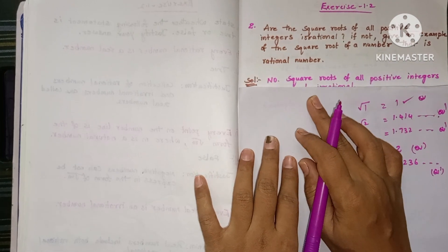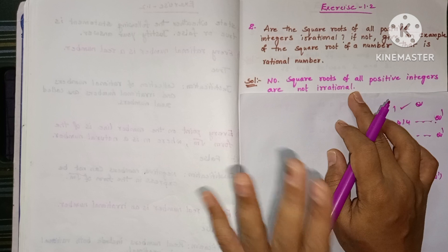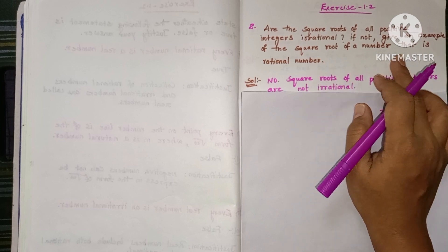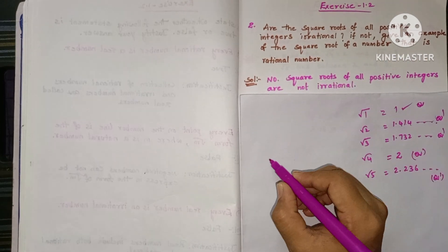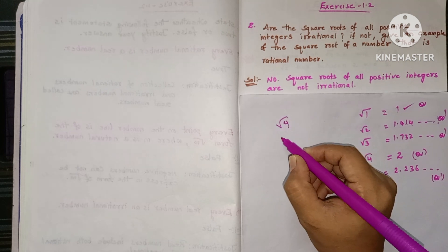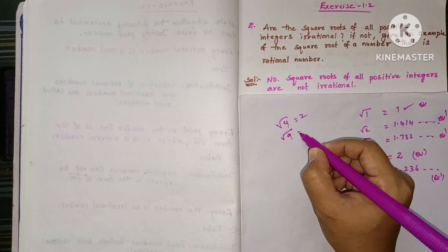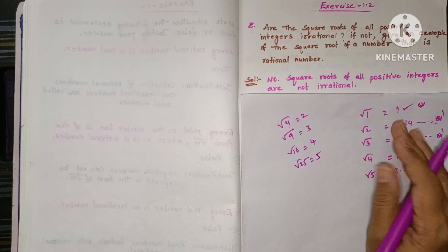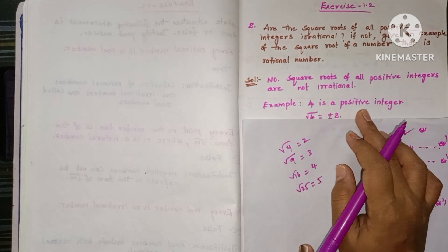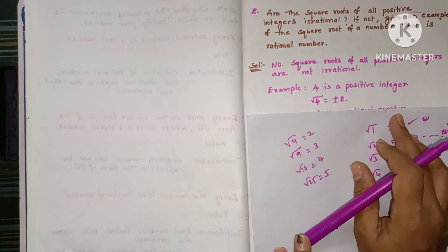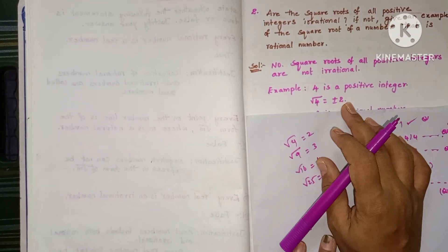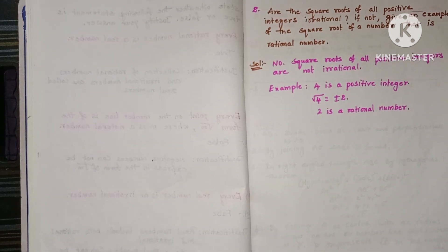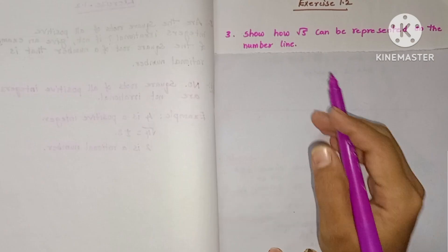If not, give an example of a square root that is rational. Example: 4 is a positive integer, and √4 = ±2, which is clearly a rational number. Similarly √9, √16, √25 are all rational. So √4 = 2 is the example showing that not all square roots of positive integers are irrational.